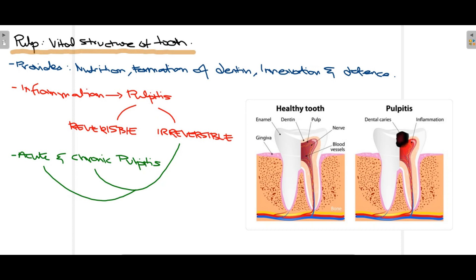Firstly, some basic facts about pulp. Pulp is a vital structure of the tooth — as you can see in this diagram, this is your pulp. It is encased by dentine and then the outermost layer of the tooth, which is enamel. The pulp performs various functions including nutrition, formation of dentine, innervation, and defense mechanisms, because it contains blood vessels, sometimes lymphatics, and nerves, with different cells that help fight bacteria and viruses present in the tooth.